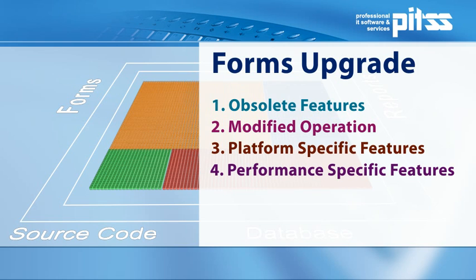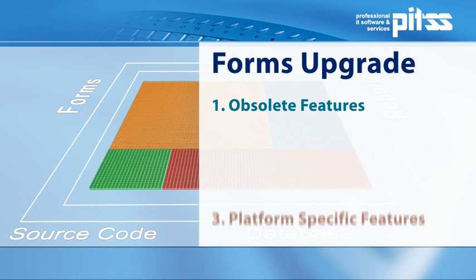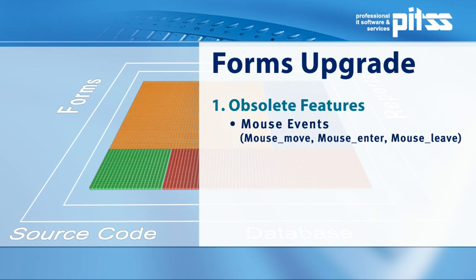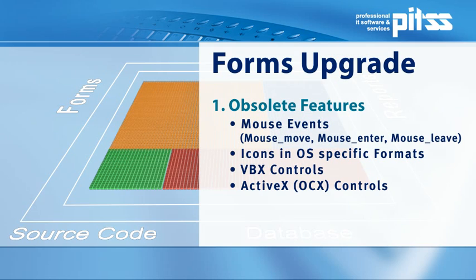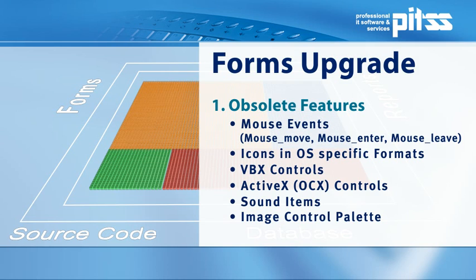Here are some of the functions which are no longer supported. Mouse events, which no longer exist in their familiar complexity. GIFs that can no longer be displayed and require conversion. Window-specific VBX and ActiveX controls must be replaced by workarounds or renewed with Java beans. Objects such as sound items or the image control, which have become obsolete, must be removed from the application.